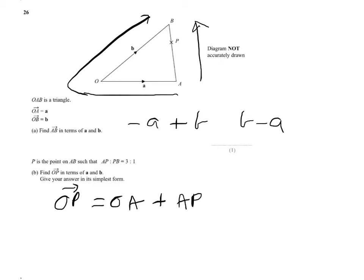So O to A is A. Now A to P is a fraction of A to B.